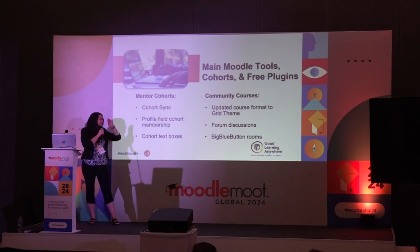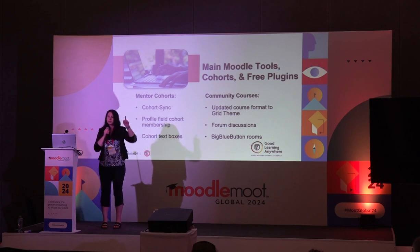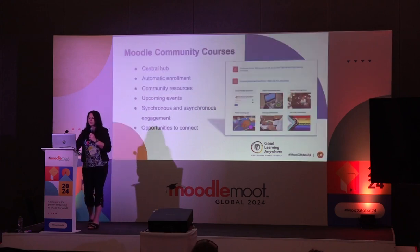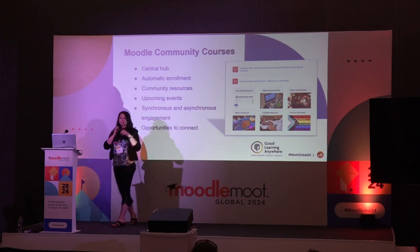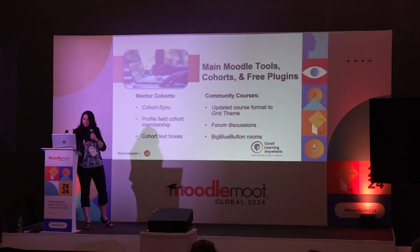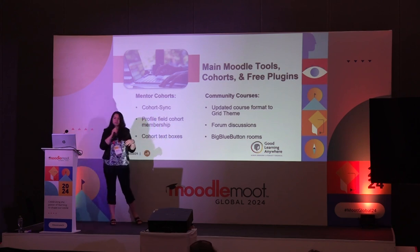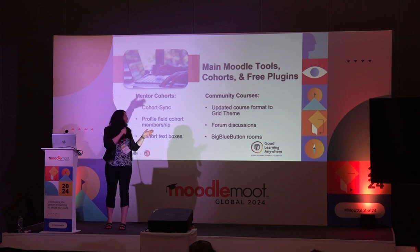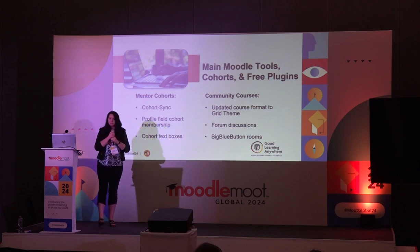For the community courses themselves, we wanted to make the view a little different — we didn't want it to be a typical course where they'd have to scroll through to find details. So the grid theme we used was key for this because it gave us a layout where we could have boxes available and they can click on it and it pops up with the information that's important to them. And of course forum discussions are key for our asynchronous options, but BigBlueButton is what we used for our synchronous meeting rooms — for one-on-one and group meetings.